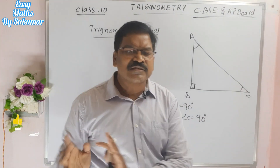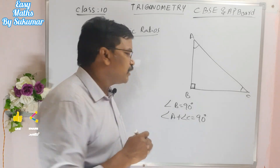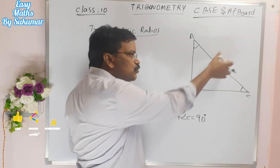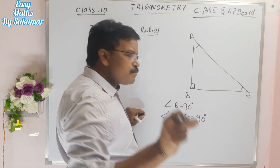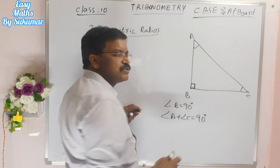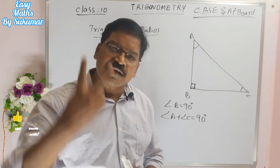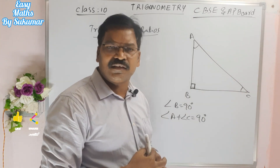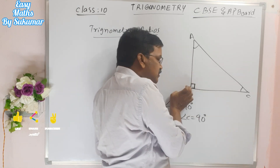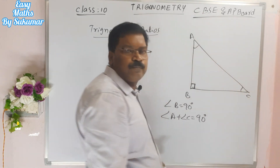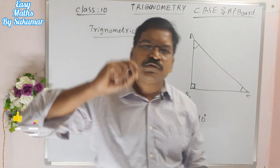We proved Pythagoras theorem in previous chapters. The Pythagoras theorem says the square of the hypotenuse is equal to the sum of the squares of the other two sides. Using Pythagoras theorem, if we know any two sides of a right angle triangle, we can find the third side.